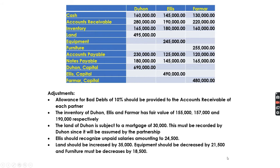Before moving on to the next topic — partnership operations — let us discuss the last activity, which was the preparation of journal entries and the basic statement of financial position for partnership formation scenario 3, where multiple sole proprietors establish a partnership.